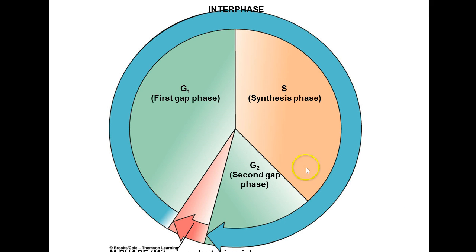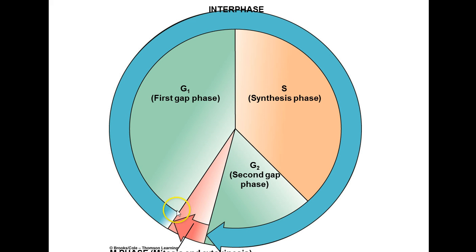Here's the diagram from the textbook showing this idea. Notice that the M phase, or mitosis, takes up just a very small part of this cycle, while the bulk of the cycle is interphase — G1, S, and G2. S stands for synthesis. G1 and G2 stand for the first and second gap.